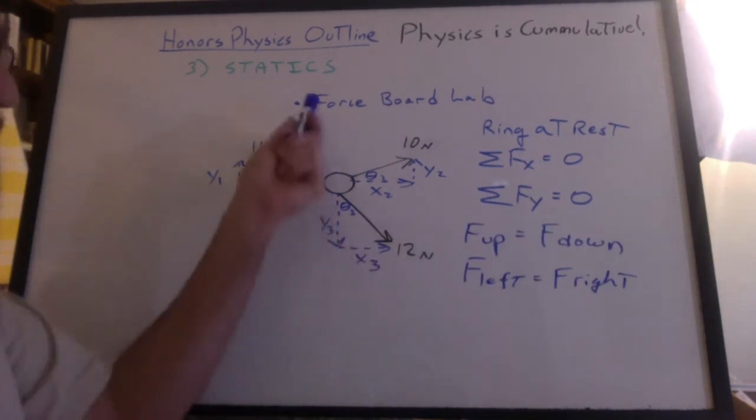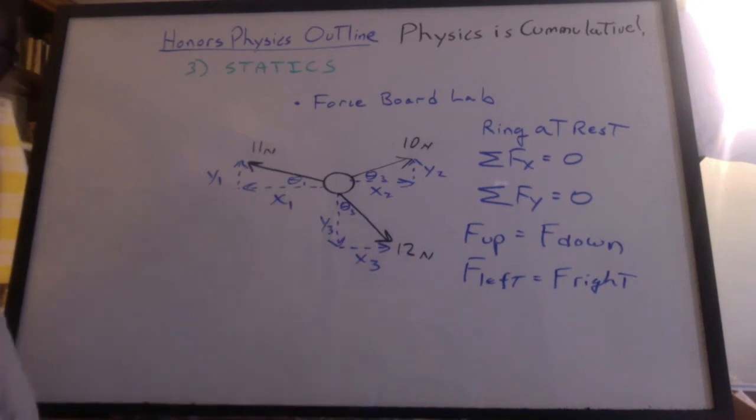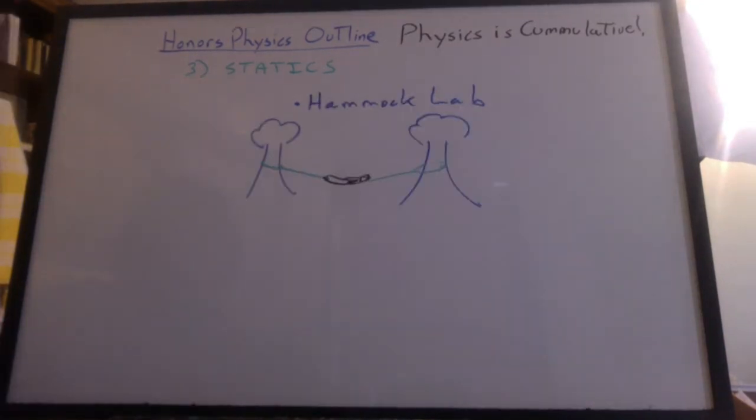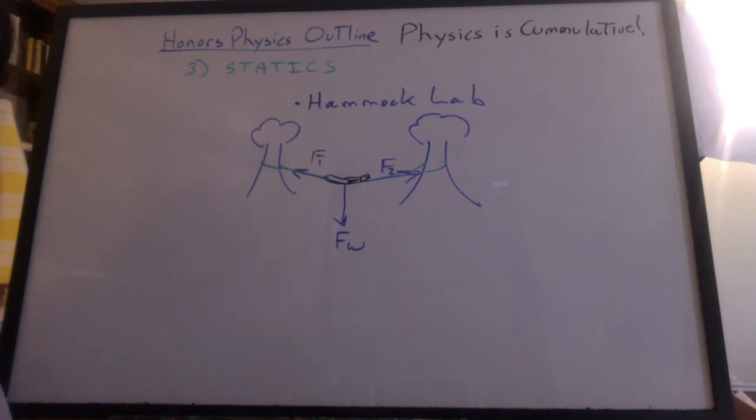We also said that the forces up equal the forces down, the forces left equal the forces right. And we saw this in numerous examples like the Hammock lab. The weight was going down, and the y components of the strings held up the weight. It all had to add up to 0.